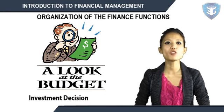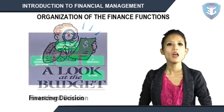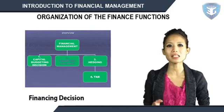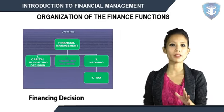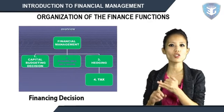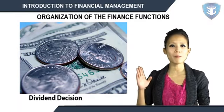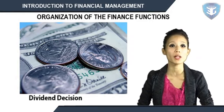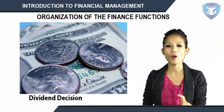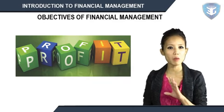The liquidity decision is concerned with the management of current assets, which is a prerequisite to long-term success of any business firm. The main objective of current assets management is a trade-off between profitability and liquidity. The financing decision — the second major decision of the firm — involves determining the best financing mix, covering two interrelated aspects: capital structure theory and capital structure decision. The dividend decision should be taken in terms of its impact on shareholders' wealth; the optimum dividend policy is one which maximizes the market value of the share.